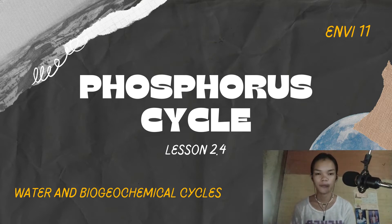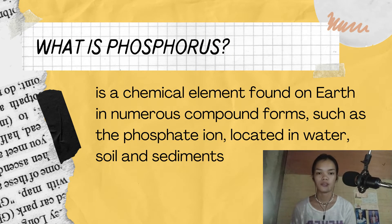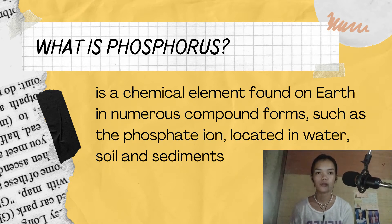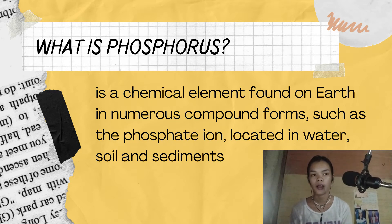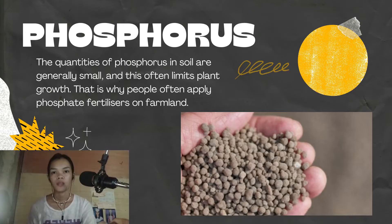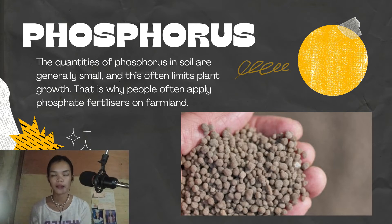Before we start on our main topic, let's talk about what phosphorus is. Phosphorus is a chemical element found on Earth in numerous compound forms, such as the phosphate ion located in water, soil, and sediments. Phosphorus does not enter the atmosphere, remaining mostly on land and in rock and soil minerals. The quantities of phosphorus in soil are generally small, and this often limits plant growth.